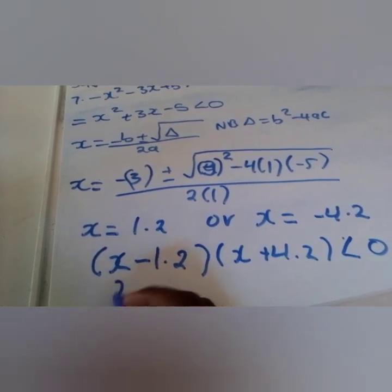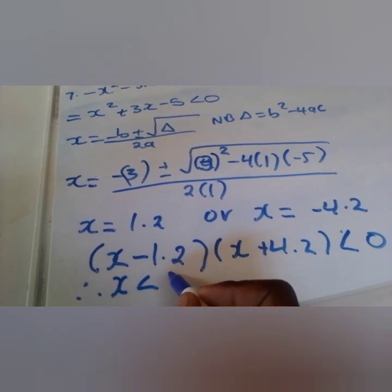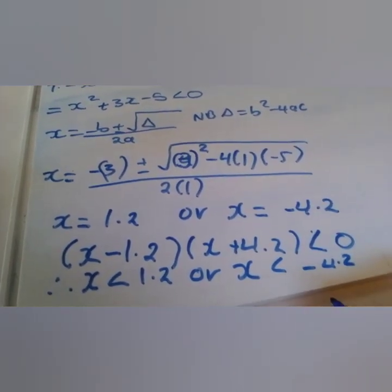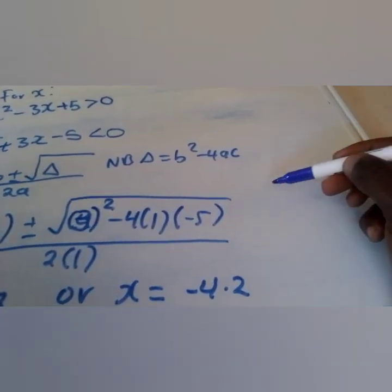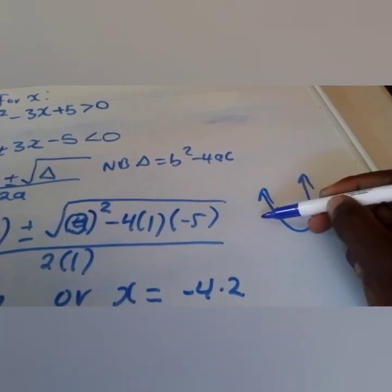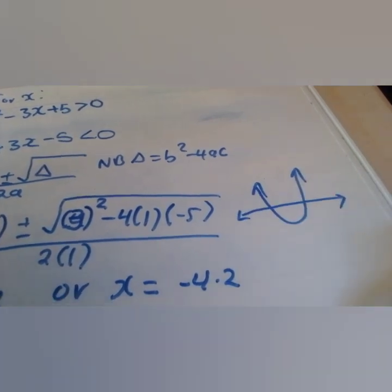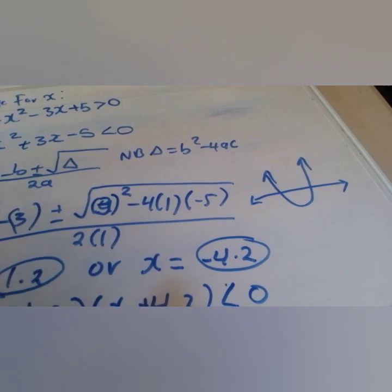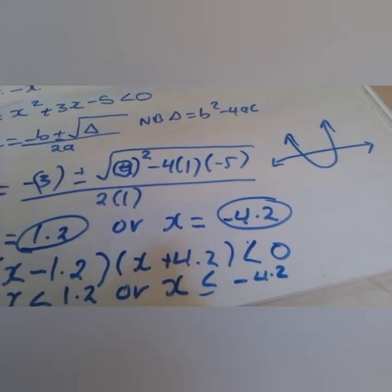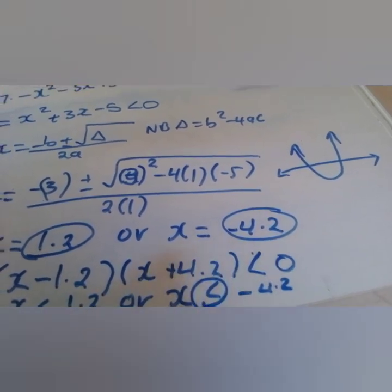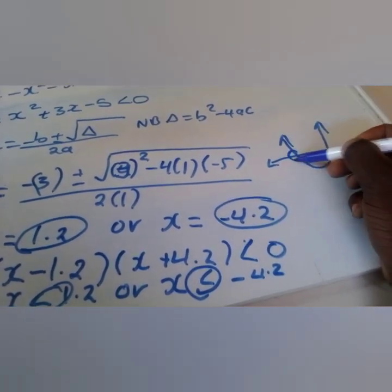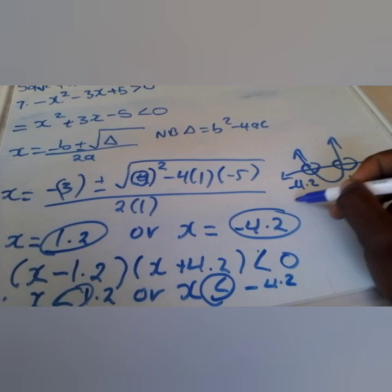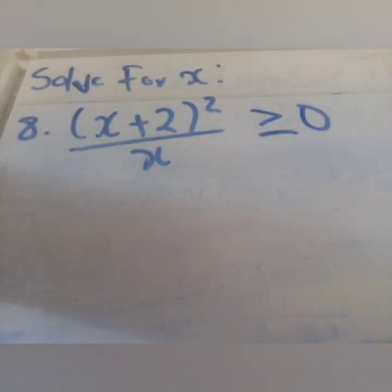Solving gives x < 1.19 or x < −4.19. We represent our answers graphically using the parabola. Our answers are approximately 1.19 and −4.19: the positive value goes to the right and the negative value goes to the left. Since we have strictly less than, we use the open dot. This is our final answer.